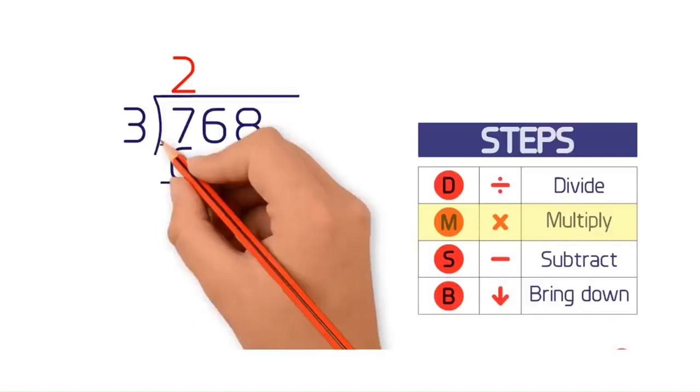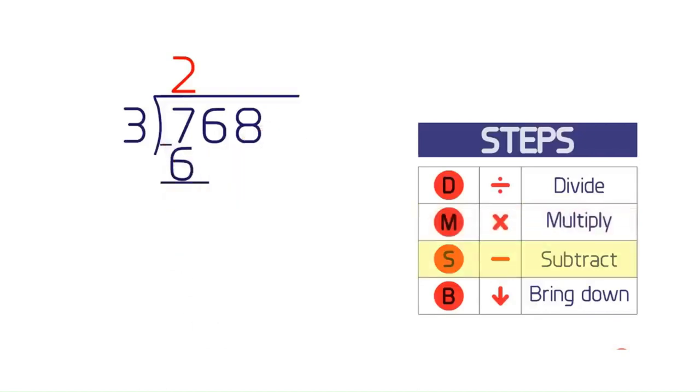Subtract 6 from 7 to get 1. After you subtract, the result should be less than the divisor. In this problem, the divisor is 3. 3 is greater than 1, so it's okay.